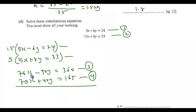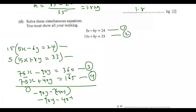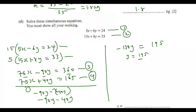Now subtract equation 4 from equation 3. The 75x terms cancel to zero. We get minus 90y minus 40y, which is minus 130y, equals 360 minus 165, which is 195. So y equals 195 divided by negative 130, giving y equals negative 1.5.